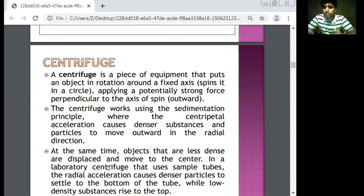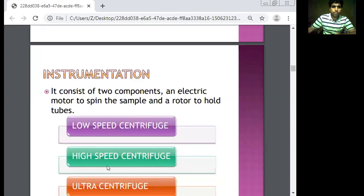In a laboratory centrifuge that uses sample tubes, radial acceleration causes denser particles to settle at the bottom of the tube and less dense substances at the top. The heavier macromolecules will go down and the lighter molecules will go up.